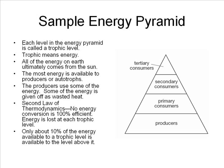Because there is less energy available to organisms in the upper levels of the energy pyramid, there can be fewer of those organisms. There is not enough energy to sustain top-level predators like sharks, owls, and such in large numbers.